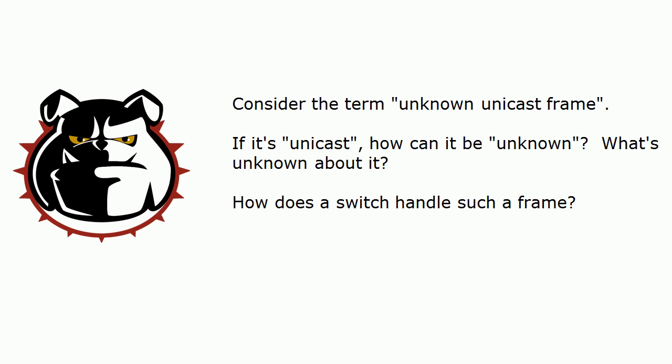Now, that unknown unicast frame — the reason it's unknown is that the switch does not have an entry for the destination MAC address in its MAC address table yet. So while it is a unicast frame destined for only one destination, the switch does not know which of its ports leads to that destination — that's where the 'unknown' part comes in. How does the switch handle that frame? The same way it would handle a broadcast: it's going to flood it, sending it out every port on the switch except the one it came in on.